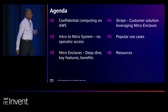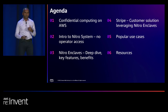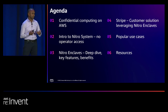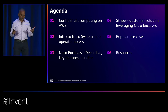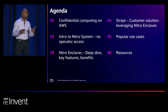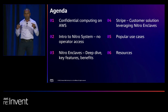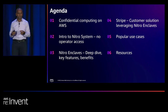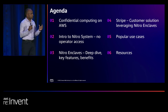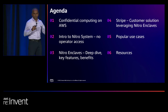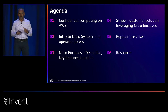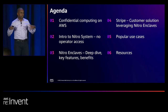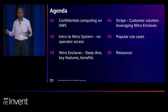Let me begin by first setting the agenda for what we're going to discuss today. I'll start by introducing our perspective on confidential computing and talk about the different security and privacy dimensions. Then we'll introduce the Nitro system and talk about our no operator access assurance. We'll then discuss Nitro Enclaves, its key features and benefits. Then you'll hear from Stripe about their journey, followed by other use cases, and resources to learn more.